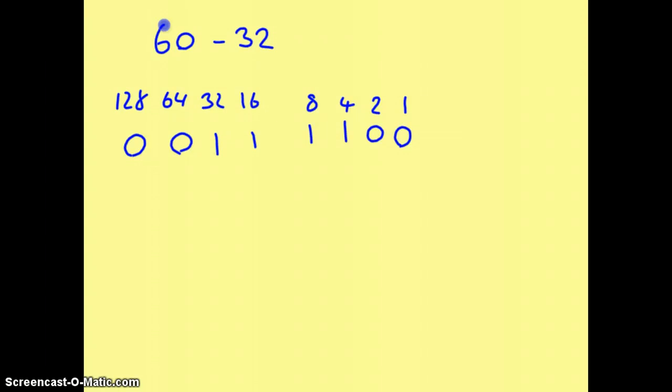If we want to subtract 32, then what we need to do is basically find what negative 32 is. And how we do that, we use the two's complement, so let's find out, first of all, what 32 is in binary. And that's an easy one, because that is just this.